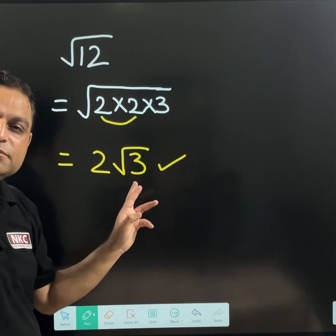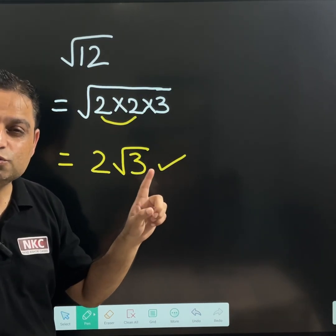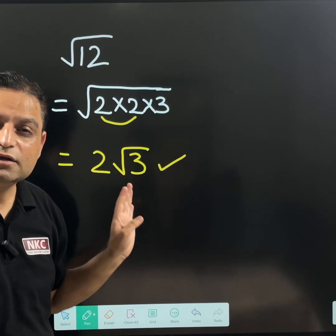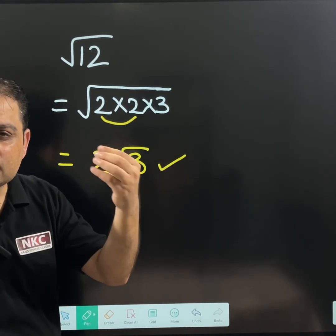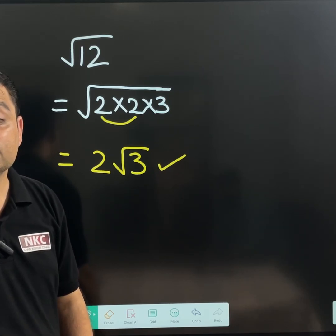Square root of 12 can be written as 2 times root 3. This is very important to know. It is going to be used further in different type of calculations. Will be very helpful.